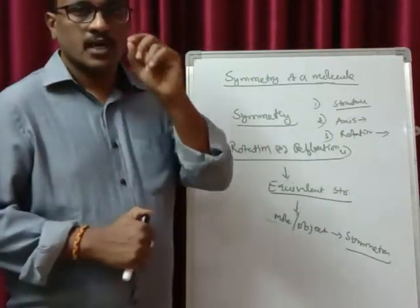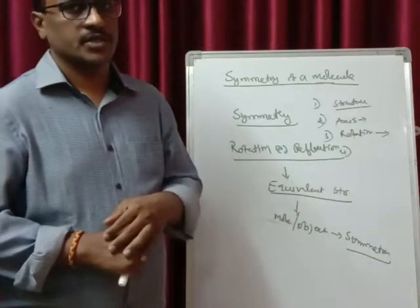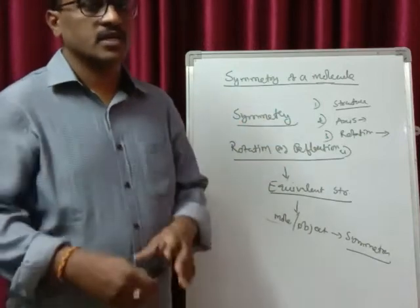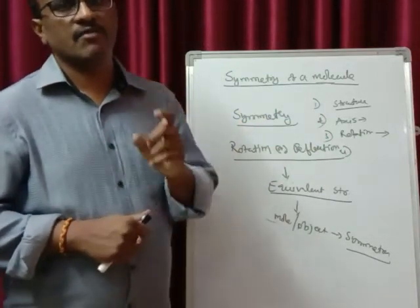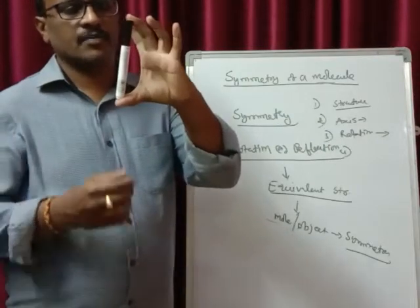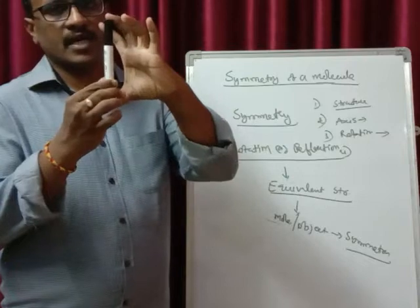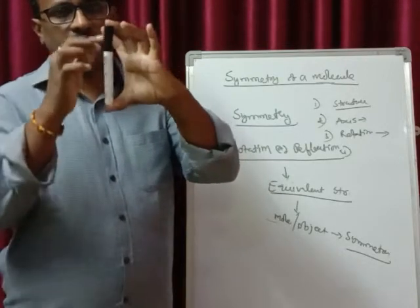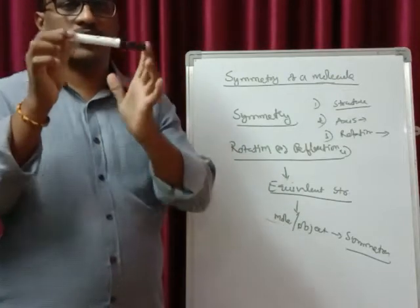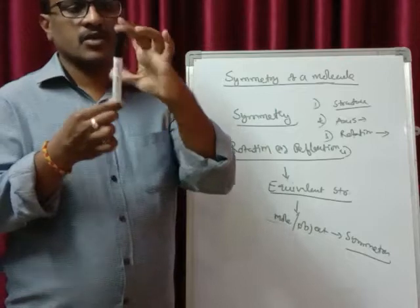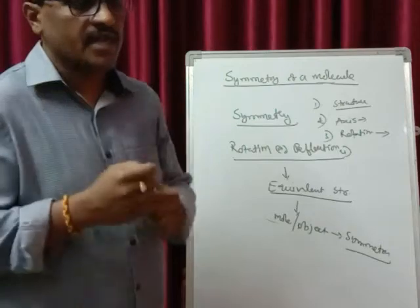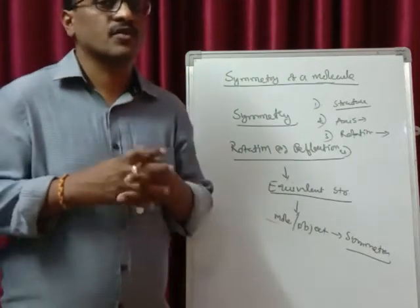You need to have the idea of the structure of the molecule, select the axis for rotation or the plane for reflection, and perform the operation along that axis or plane. The other thing is that the center of gravity should not change. If the center of gravity changes, it doesn't make sense. Whenever you do the symmetry of a molecule, the center of gravity should remain constant. If rotating along the x-axis, the center of gravity should remain along that axis — it should not go into the y-plane or z-axis. These are the criteria in order to do the symmetry of the molecule.